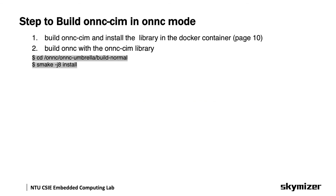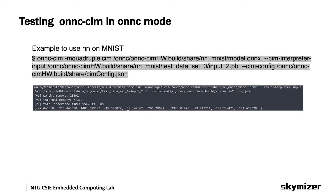In order to run the simulator in ONIX mode, we first need to install the CIM library we built previously, and then link the library and build the ONIX compiler. After the ONIX binary is built, we can use the ONIX CIM command to execute ONIX with the CIM library. Here is an example to run a MNIST model with ONIX CIM. You can find the command in the project README. If you see the expected result, the ONIX mode simulation is successful.